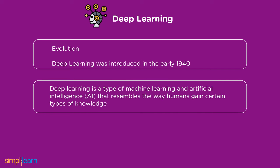Deep learning can be considered as a type of machine learning and artificial intelligence, or AI, that imitates how humans gain certain types of knowledge. Deep learning includes statistics and predictive modeling. It makes processes quicker and simpler, which is advantageous to data scientists who gather, analyze, and interpret massive amounts of data.